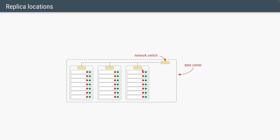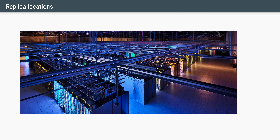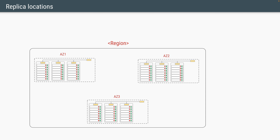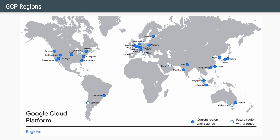This is an image of a Google data center where you can see the rows of racks and the switches at the top of each rack. A single data center is called an availability zone, and at least three such availability zones combine to make up a region. Each cloud provider will have a map which shows you all the regions available for that cloud provider.